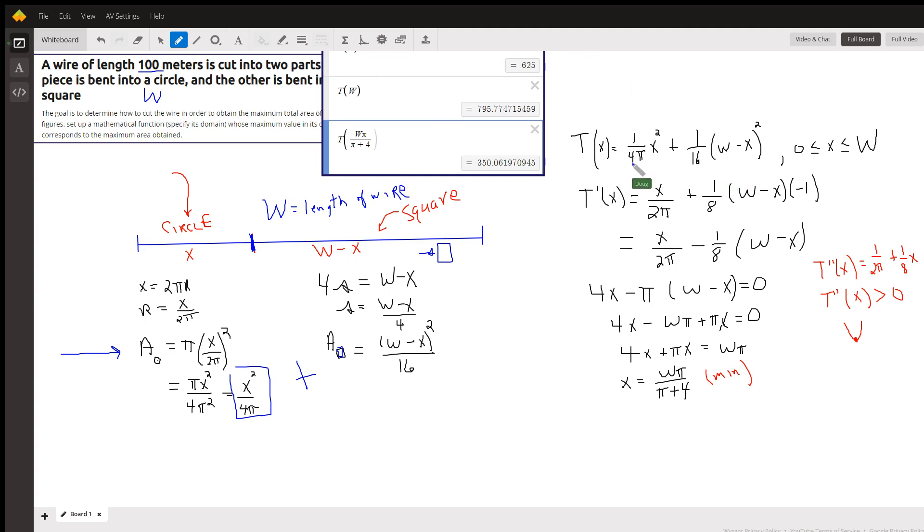Is x squared over 4π plus 1/16th of (w minus x) the quantity squared, where x has to be between 0 and w, or in this particular problem 0 and 100. If x is 0, that means there's no circle, we've got all square. And if x is 100, we've got all circle, no square.